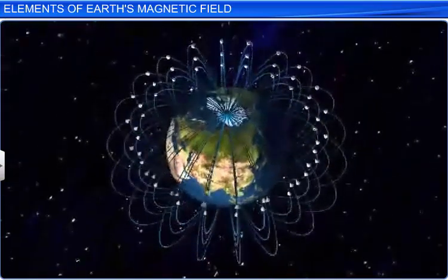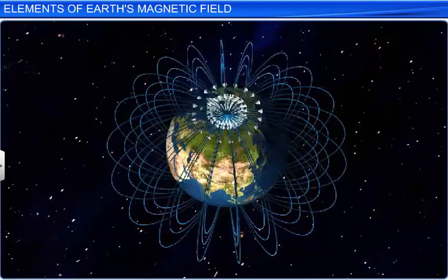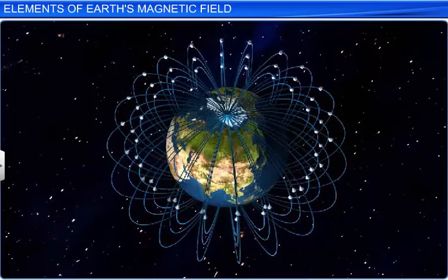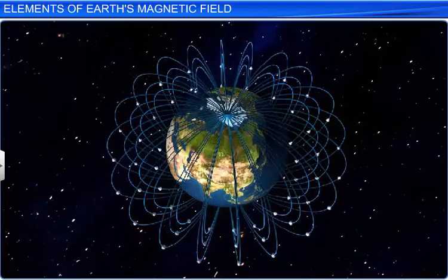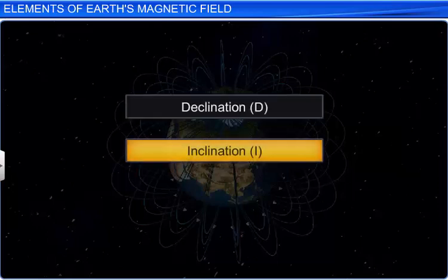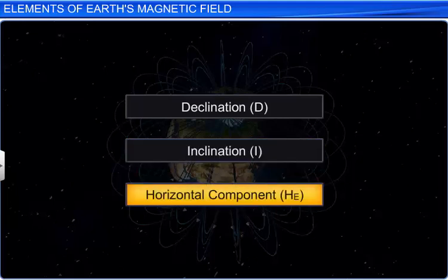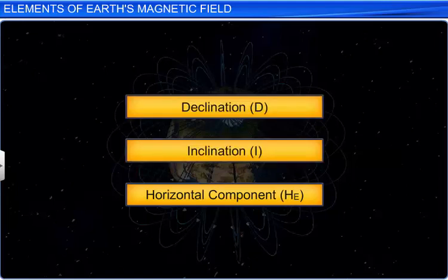To completely describe the magnetic field at any point on the surface of the Earth, we have to specify its three elements at that point, namely: Declination D, Angle of dip or inclination I, and Horizontal component of the Earth's magnetic field H. Let us study about these three elements in detail, one by one.